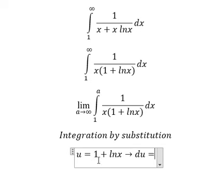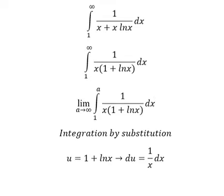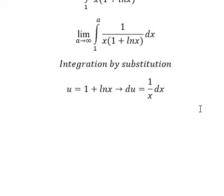Now we need to take the derivative of both sides. This constant gives us zero, and this one gives us 1/x. Next we need to change the bounds.